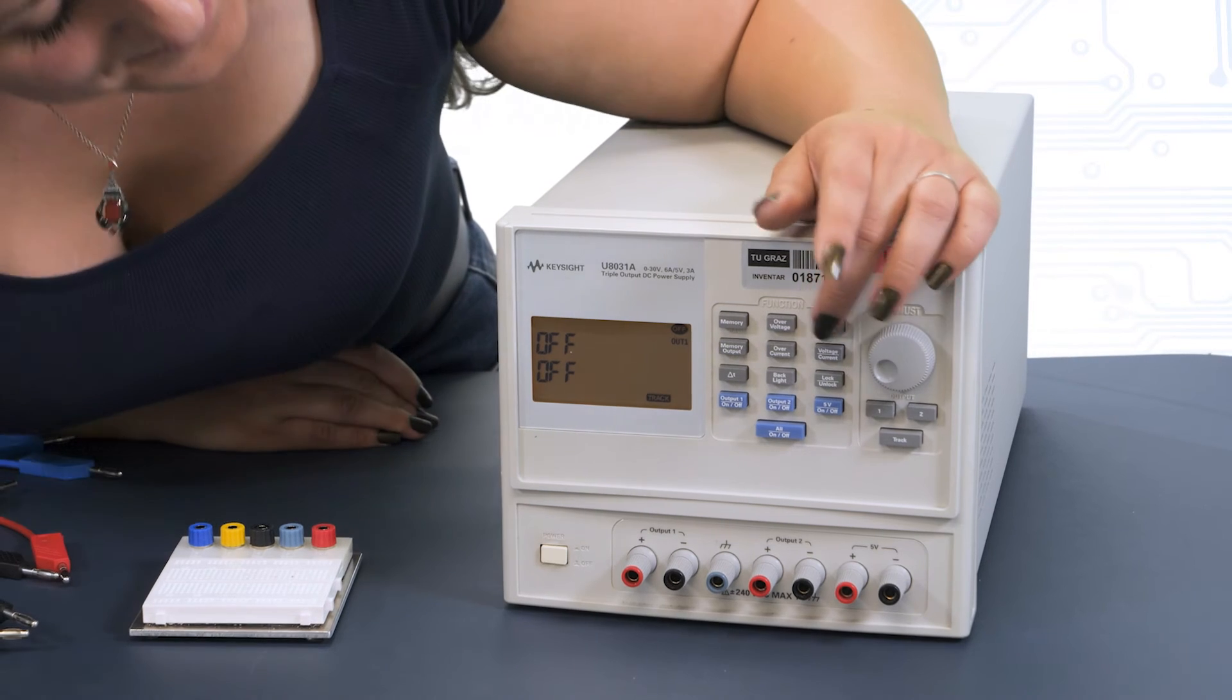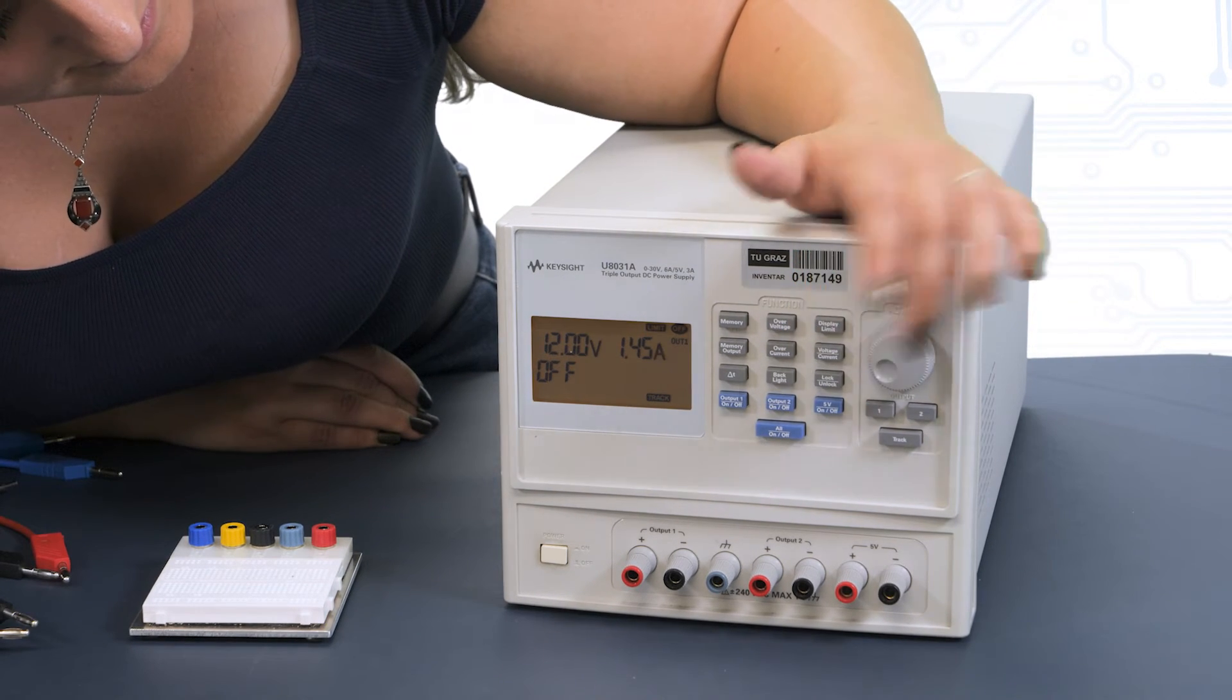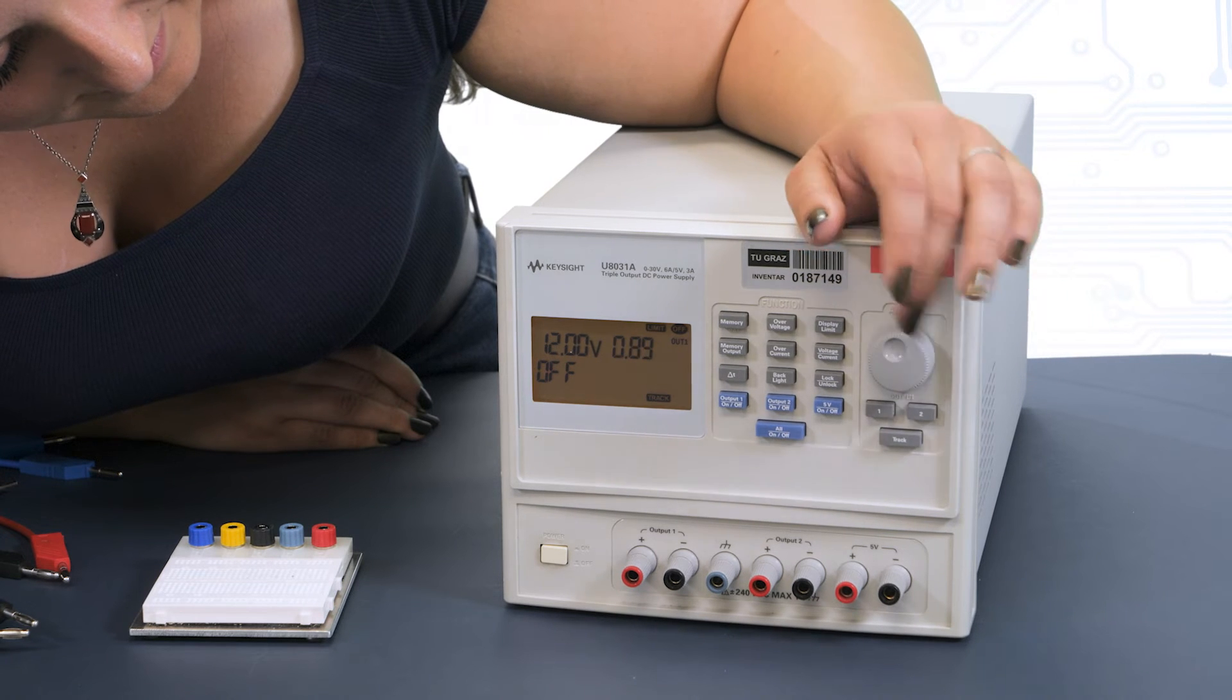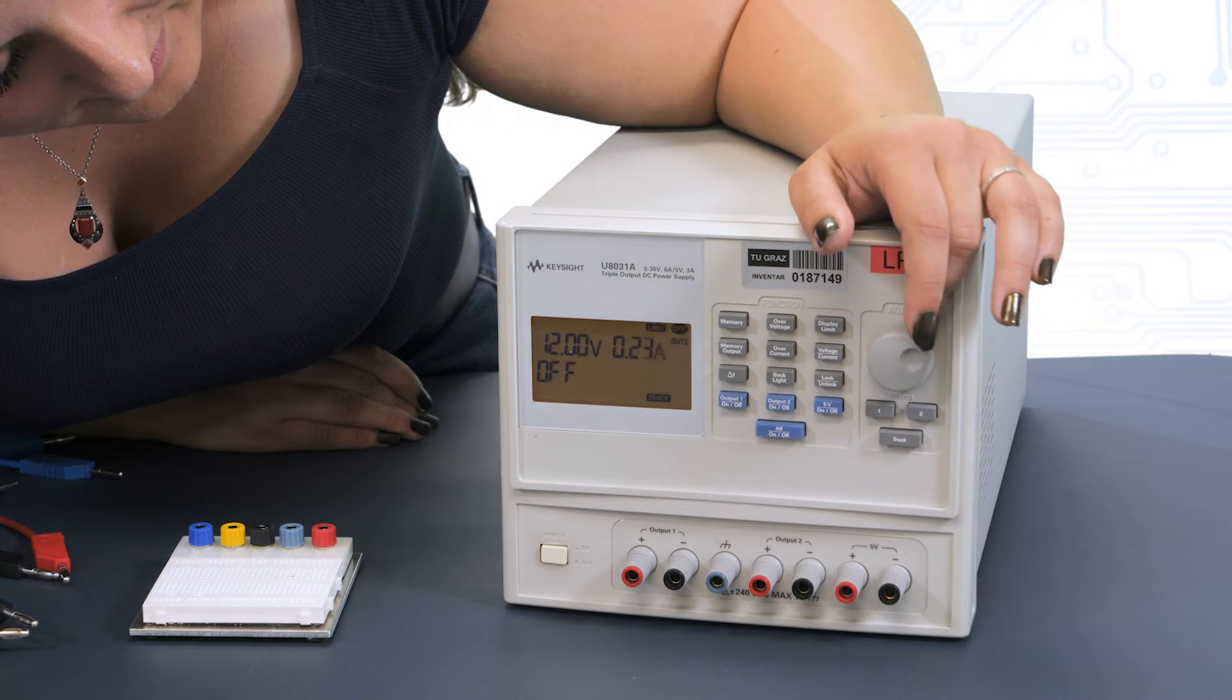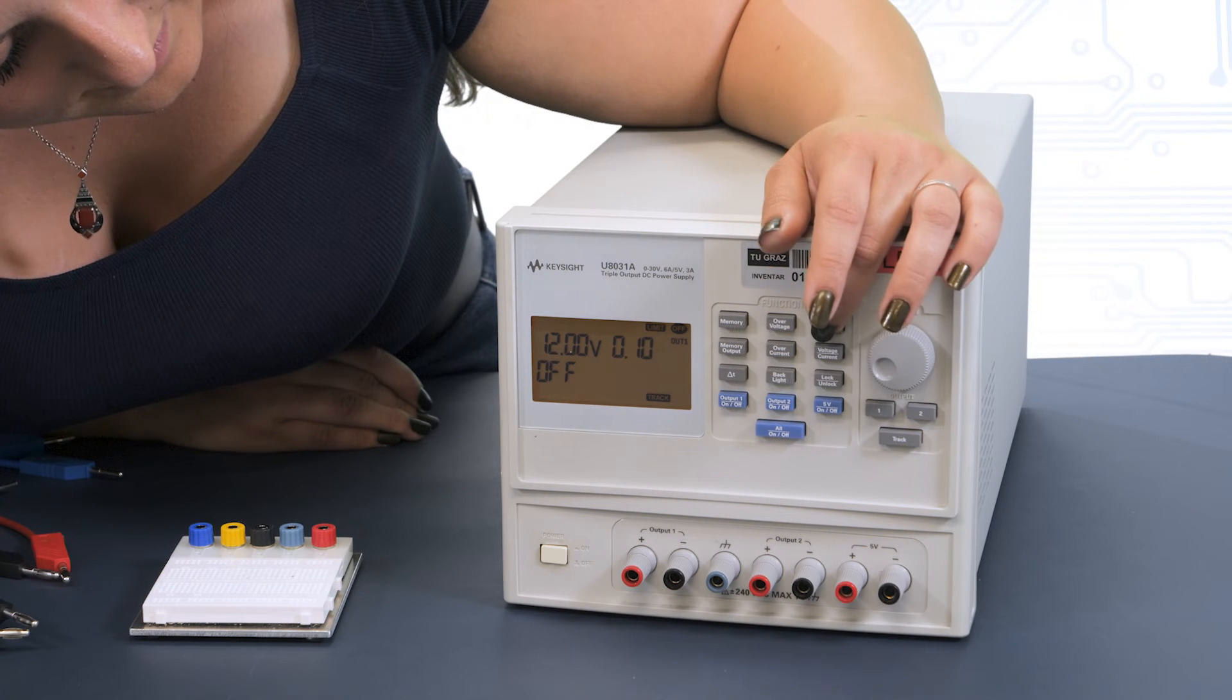By pressing this button, we enter limit mode of the device. With this mode, it is possible to set the desired limits for current and voltage using the rotary switch.